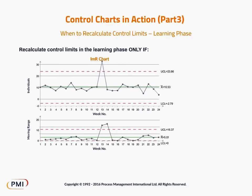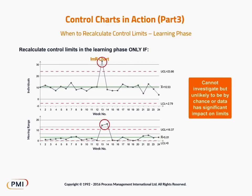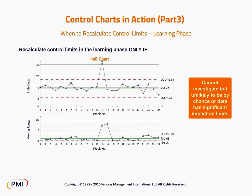Third, if an assignable cause is indicated and an investigation is not possible or is inconclusive, but the effect of the cause is so large that it is extremely unlikely it happened by chance, or if this one piece of data has a significant impact on the process limits, you can recalculate the limits without this point, but continue to show the point on the chart.